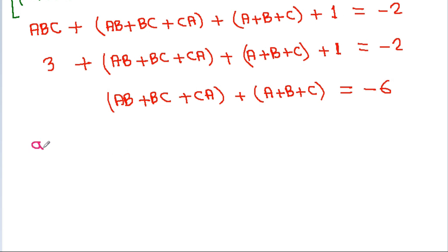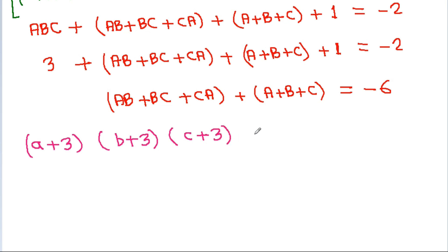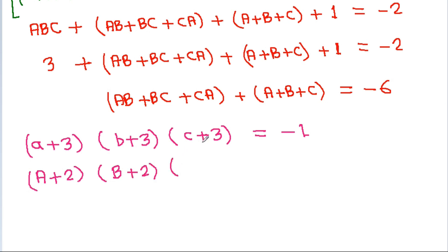And we have (a+3)(b+3)(c+3) equal to minus 1. Now a+3 will be capital A+2, b+3 will be capital B+2, and c+3 will be capital C+2, so (A+2)(B+2)(C+2) is equal to minus 1.